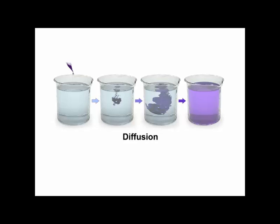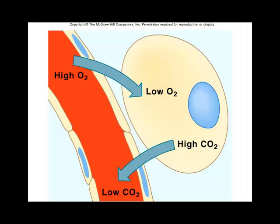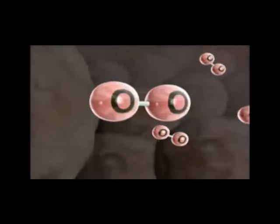Life is dependent on diffusion. Without it, cells, tissues, organs, and organisms would not survive. In humans, an important example of diffusion is the exchange of oxygen and carbon dioxide between the blood and the cells. For this example, let's focus on oxygen.